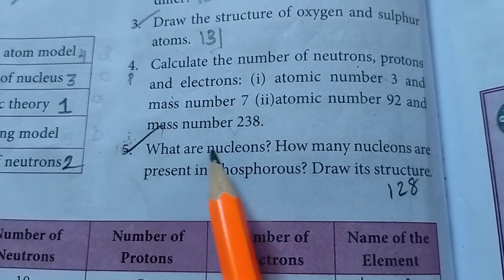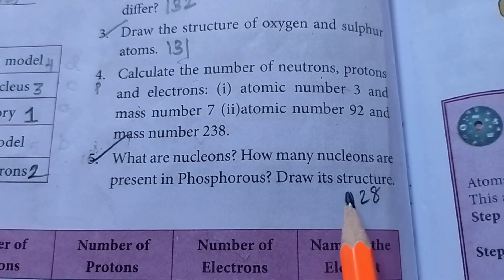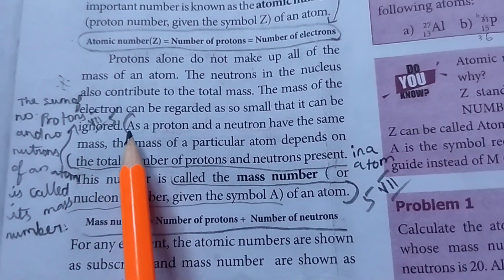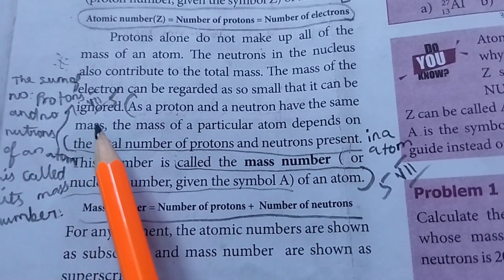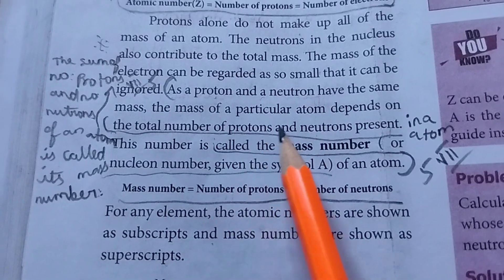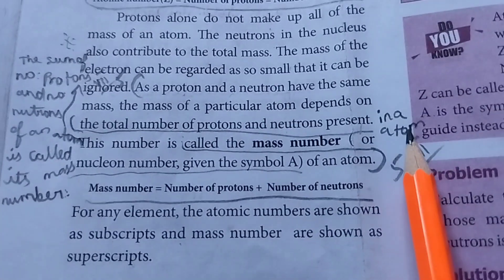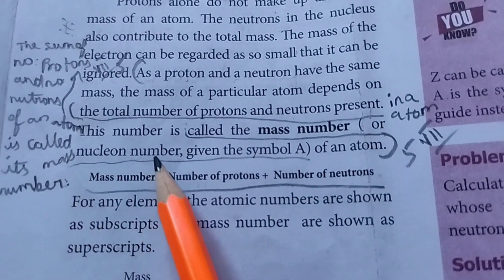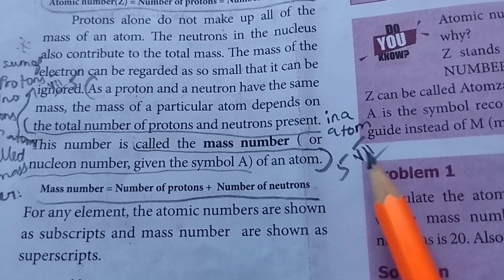Fifth question. What are the nucleons? How many nucleons are present in phosphorus? Draw its structure. Take page number 128. As a proton and a neutron have the same mass. The mass of a particular atom depends on the total number of protons and neutrons present in an atom. This number is called the mass number or nuclear number. Give the symbol A of an atom. This is the seventh Roman letter and the fifth question answer.